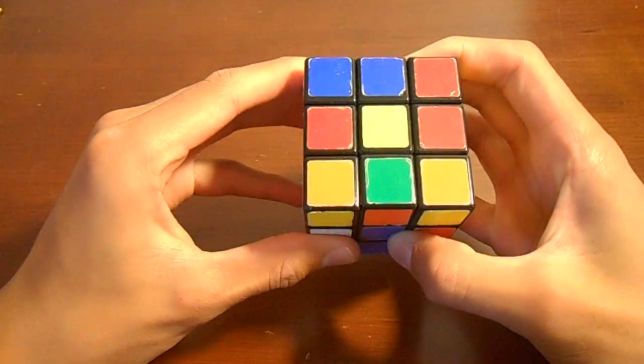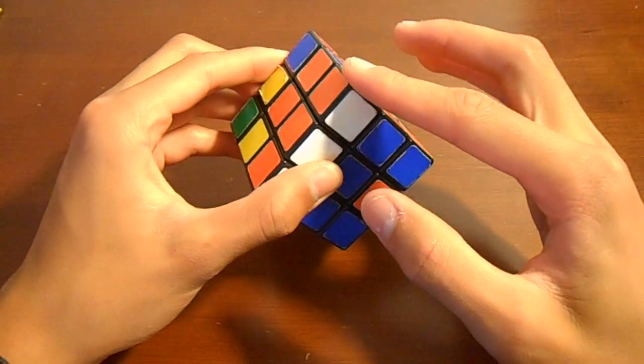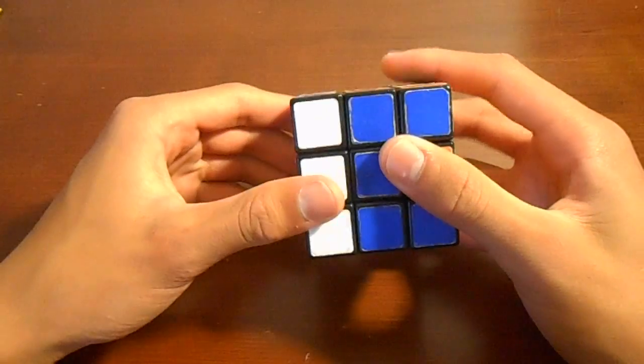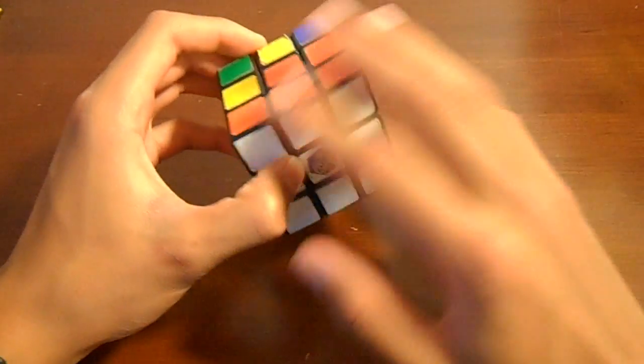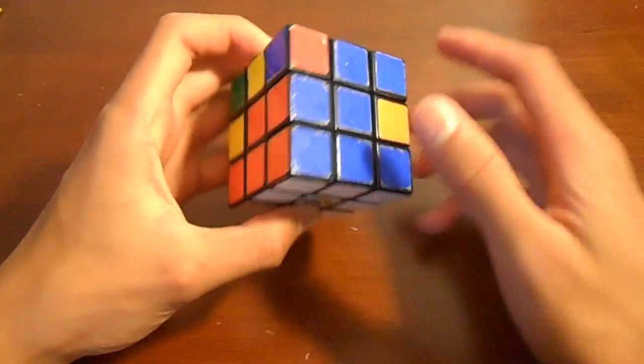So the first move pairs up the pieces. The second move inserts them into the slot. And then the third move puts everything back. And now you have both the corner and the edge piece solved.